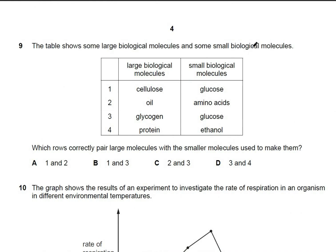Question 9: match biological molecules with their monomers. Cellulose is a polymer of glucose — correct. Oils have fatty acids as monomers, not amino acids — that option is wrong. Glycogen is a polymer of glucose — correct. Proteins are polymers of amino acids, not ethanol — also wrong. The answer is B: one and three only.